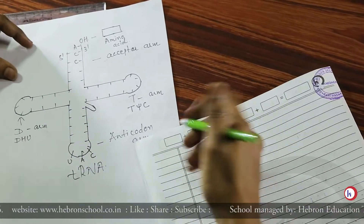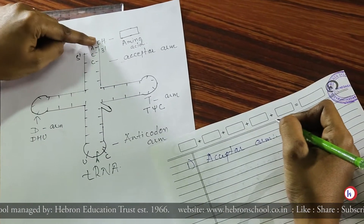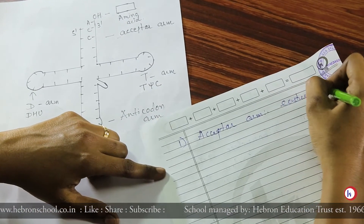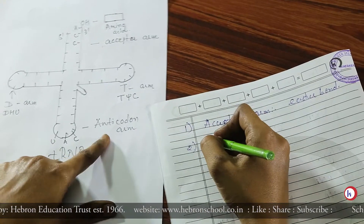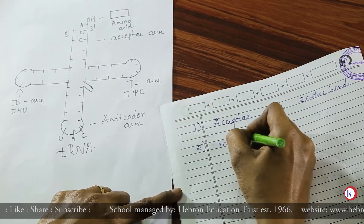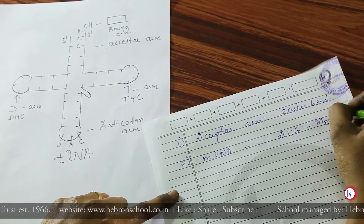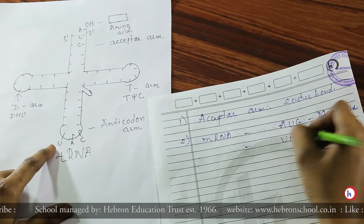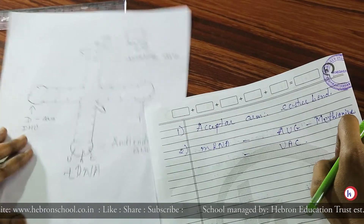The amino acid acceptor arm accepts amino acid at the OH group, and it is linked with the OH group by an ester bond. So it receives the amino acid. Opposite to this is the anticodon arm. Anticodes code for a definite amino acid. For example, on mRNA the code AUG codes for methionine, and the complementary bases on tRNA are UAC. Because of this UAC anticodon, tRNA will pick up the amino acid methionine.